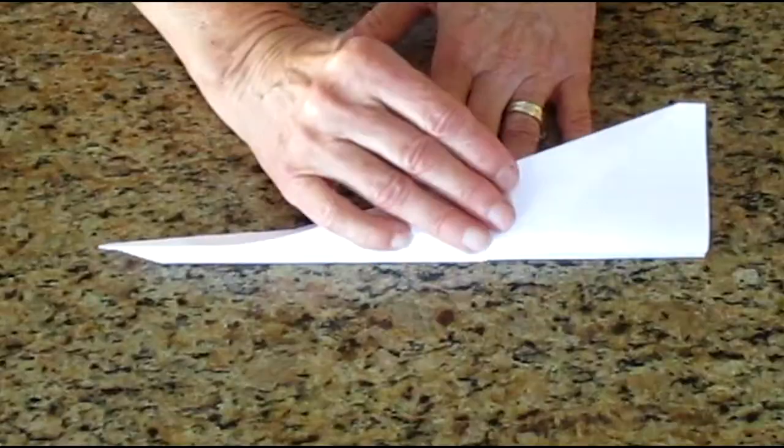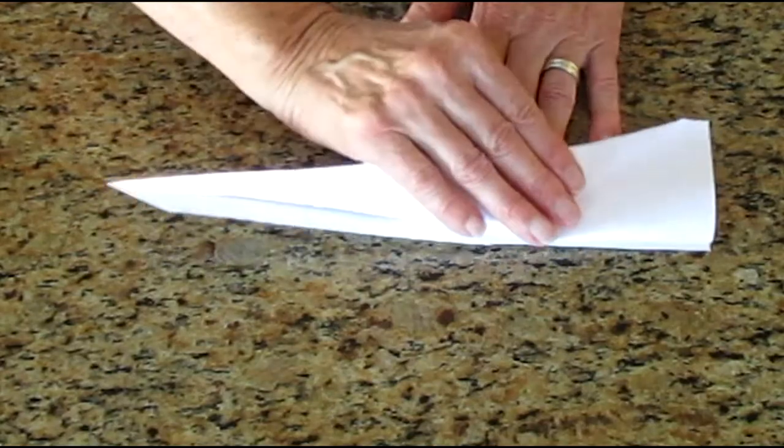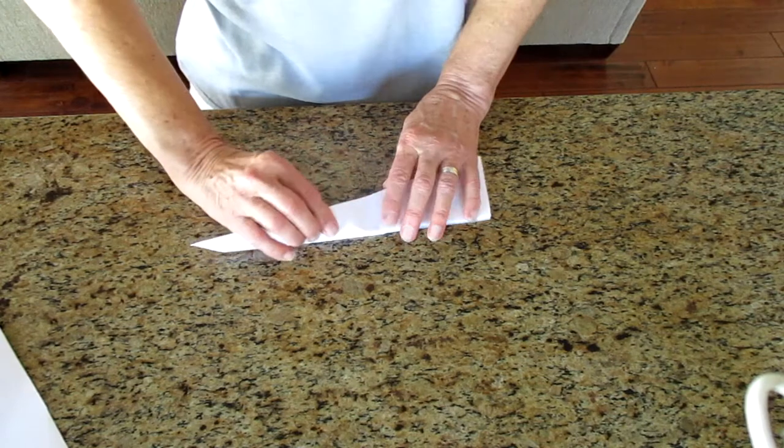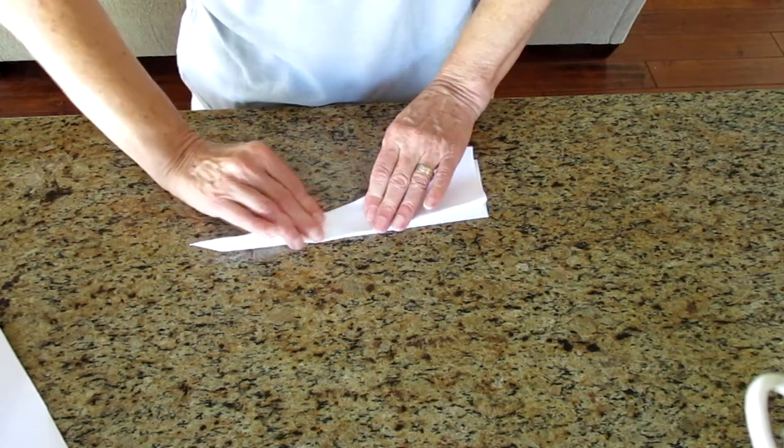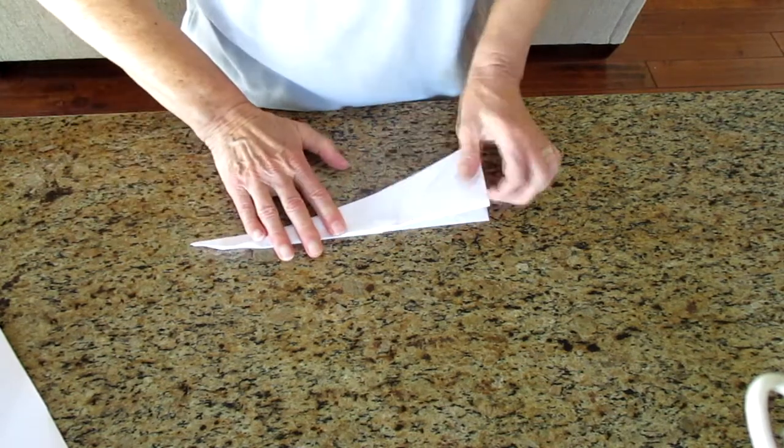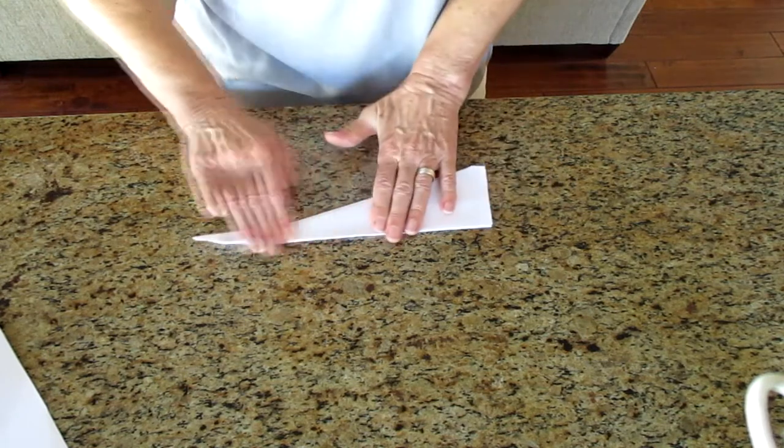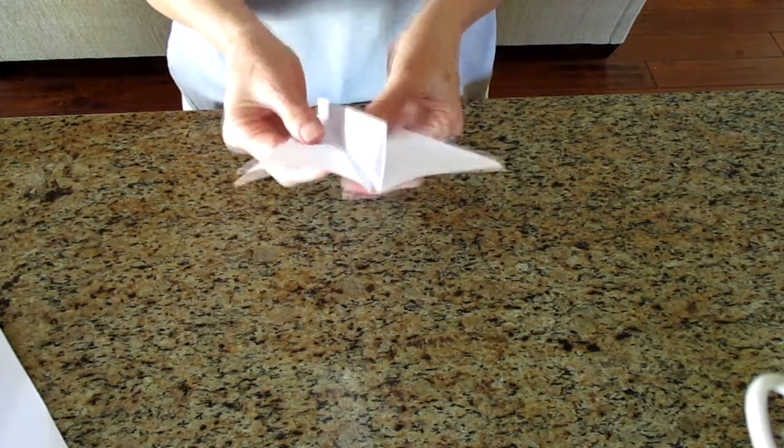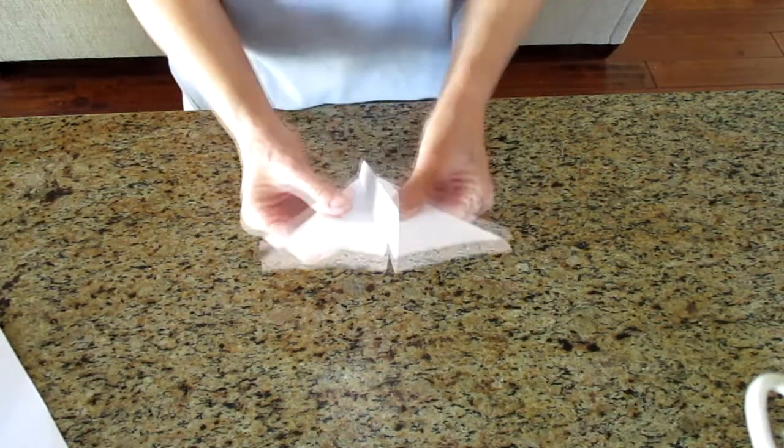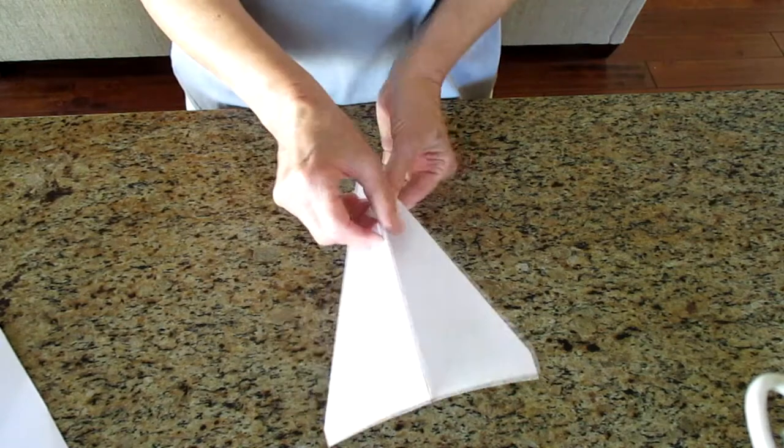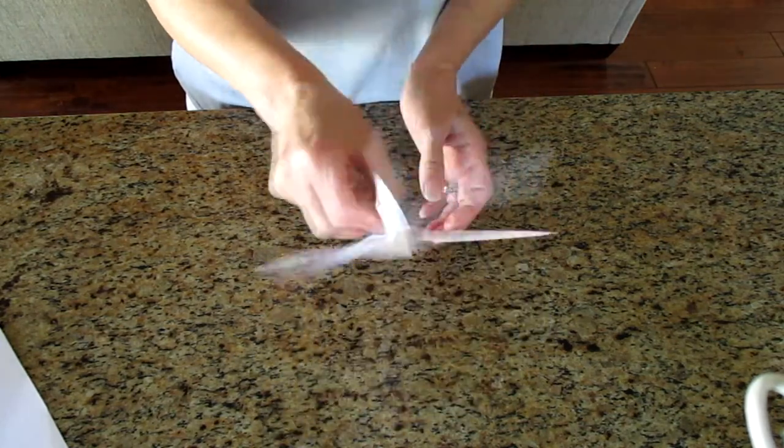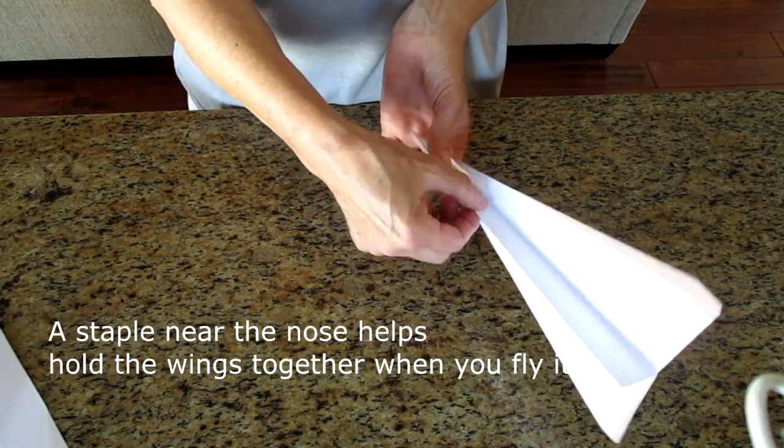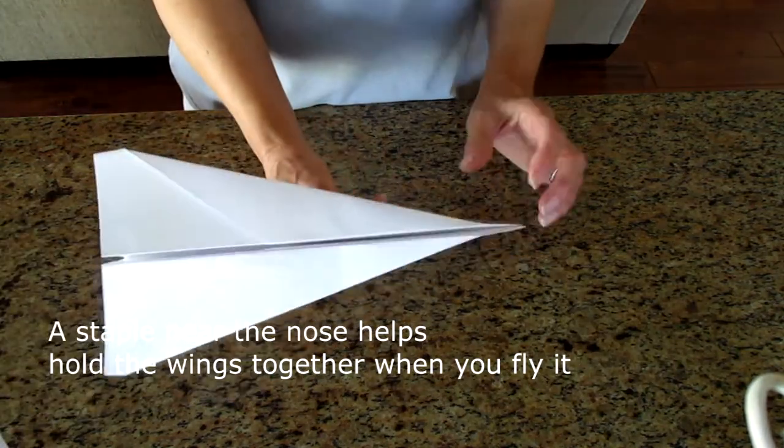You do the same thing with this side. Fold it down to meet the other side. Meet it up perfectly. Here we go. Now I'm going to unfold the wings. Hope you can see this. And this part right here is where you hold your airplane to throw it. You can put a staple in here to make sure that it stays together when you fly it.